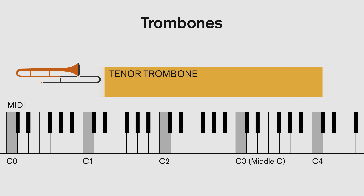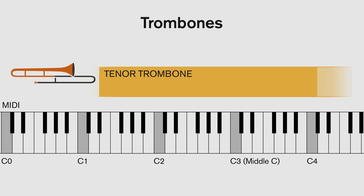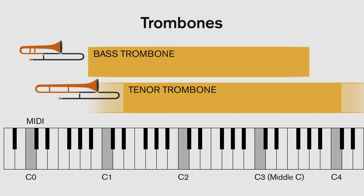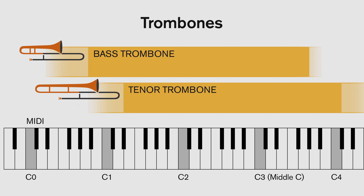Trombones next. We have the tenor trombone and the bass trombone in the standard orchestra. The range of the tenor trombone is E1 to C4, so the E above the cello's bottom C, up to just over three octaves above, to the C above middle C. A good soloist might get up to the F above, but that's quite specialised. You can also get range extensions for the trombone which get you down to the C or the Bb below. The bottom of the bass trombone starts about a fifth lower than the tenor, from Bb0, and goes up to around G3 above middle C. Interestingly, the fundamental note of a bass trombone is lower — the Eb, a fifth below — so players are able to produce pedal tones below the Bb.